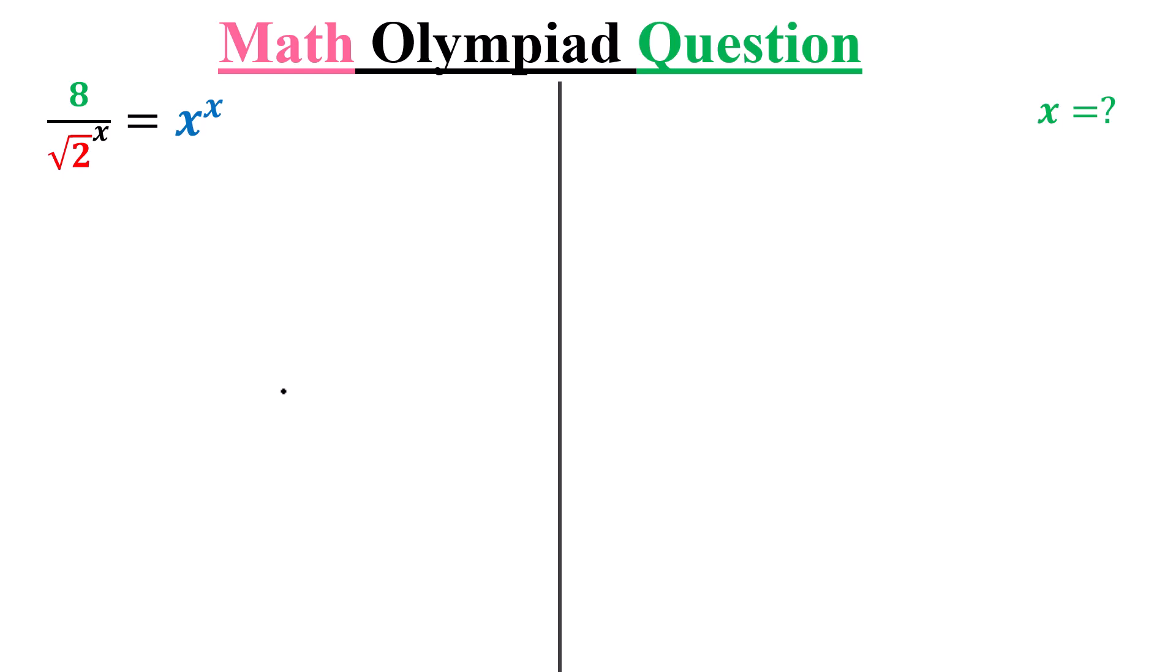This is the same as 8 equals x to the exponent x times root 2 to the exponent x. Now we have x here and x there.